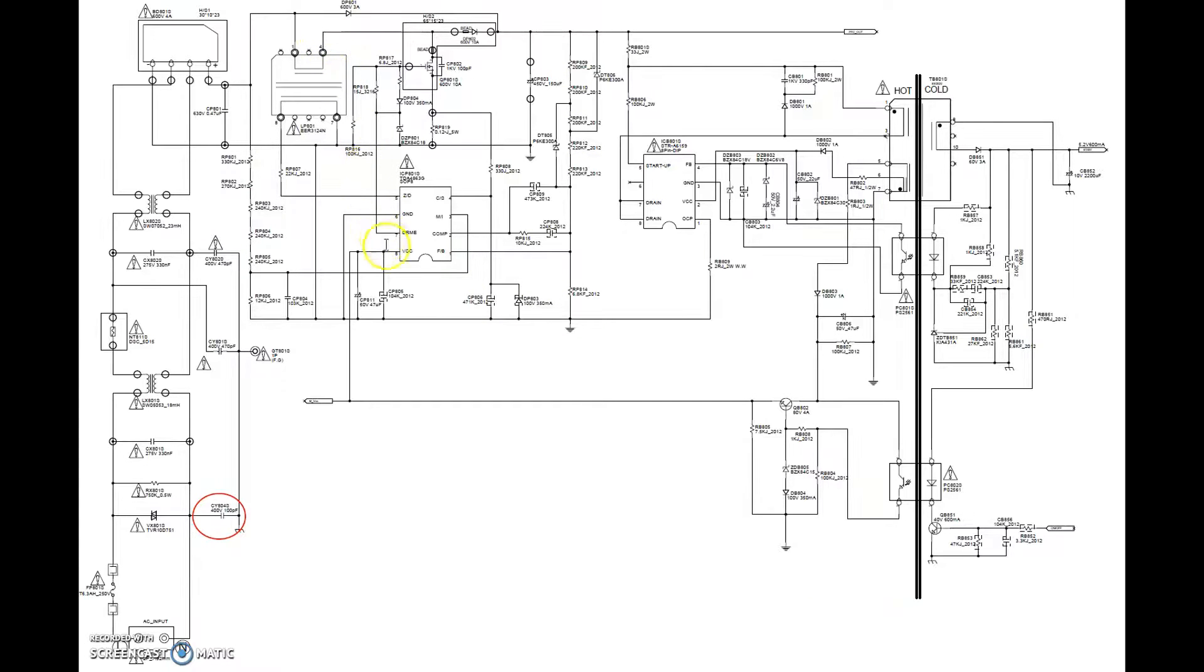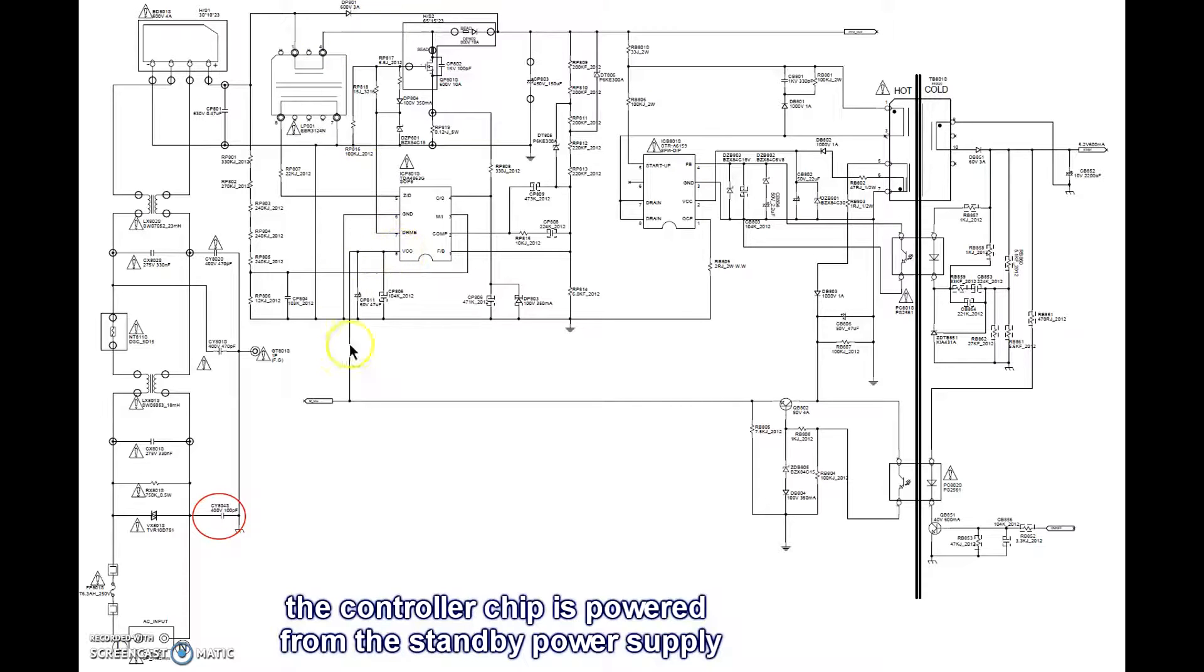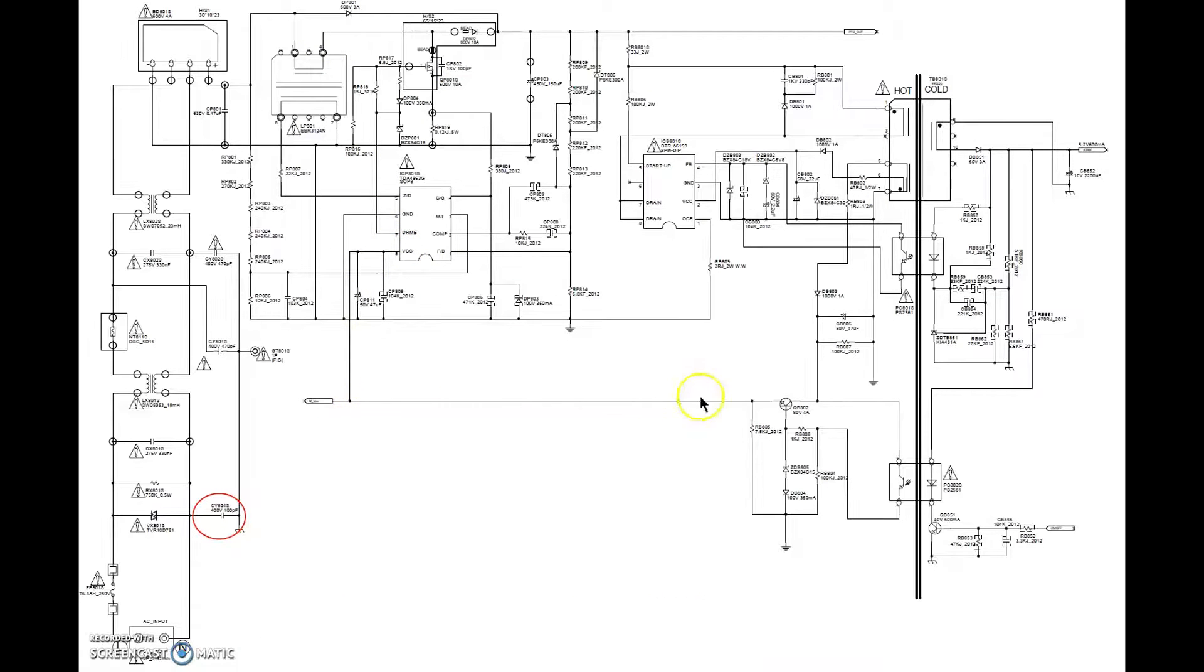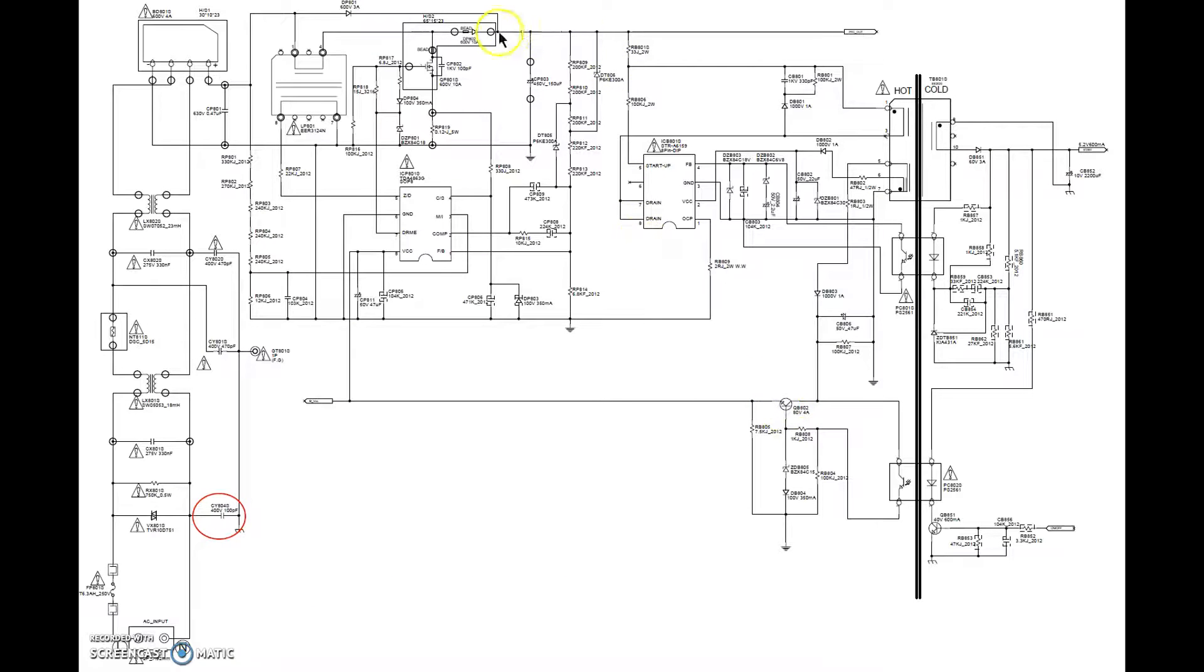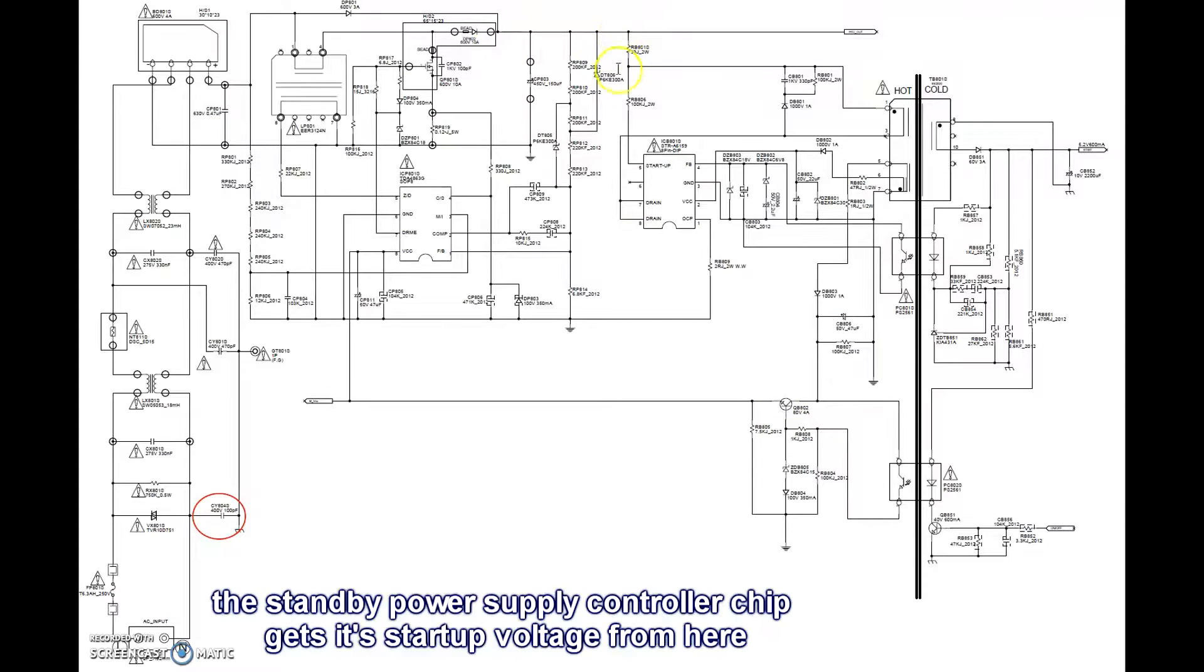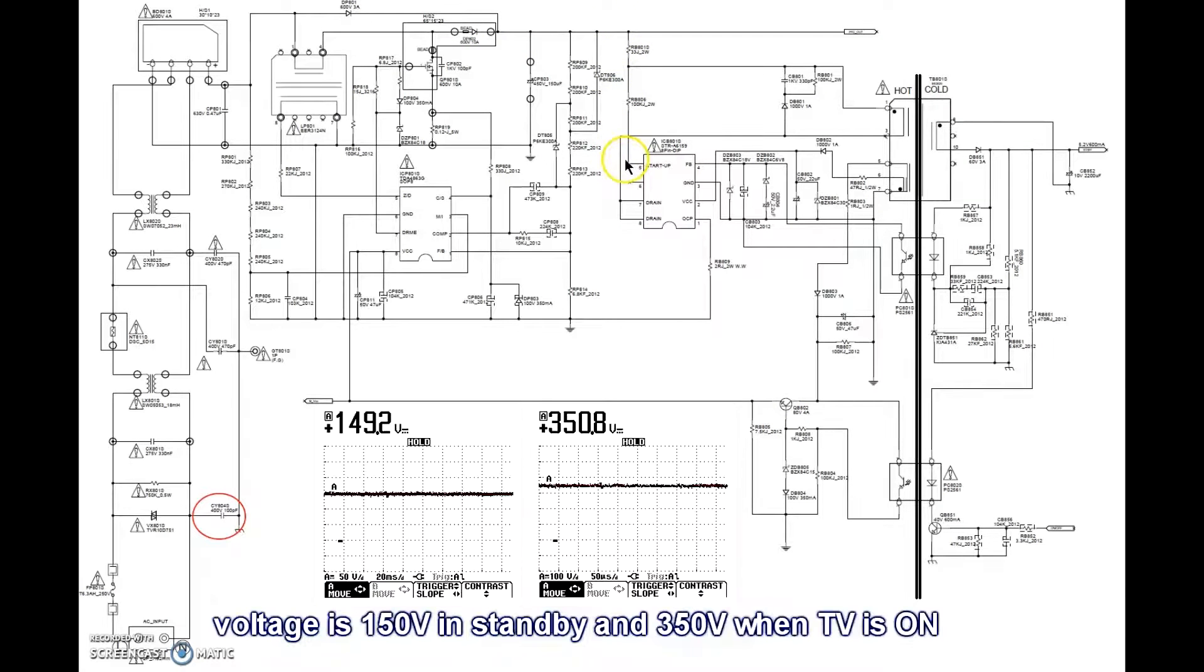Its power supply comes from the standby power supply, which comes through this transistor, which is the one with the bad solder joints. The startup voltage for the standby power supply comes from here. It's 150V or 350V depending if the TV is on or off.